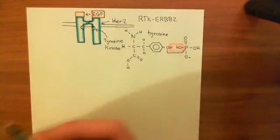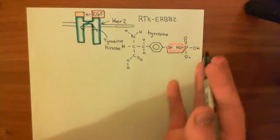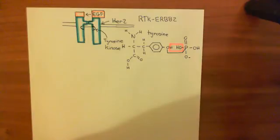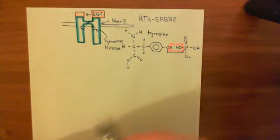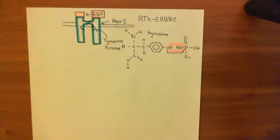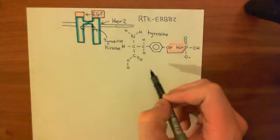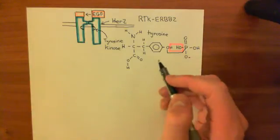Tyrosine kinase enzymes don't usually use inorganic phosphate groups like this. Instead, they get the phosphate group from ATP molecules — taking the third phosphate group off an ATP molecule, turning it into ADP, and using the energy released by the hydrolysis of ATP to catalyze adding the phosphate onto the hydroxyl group of the tyrosine.